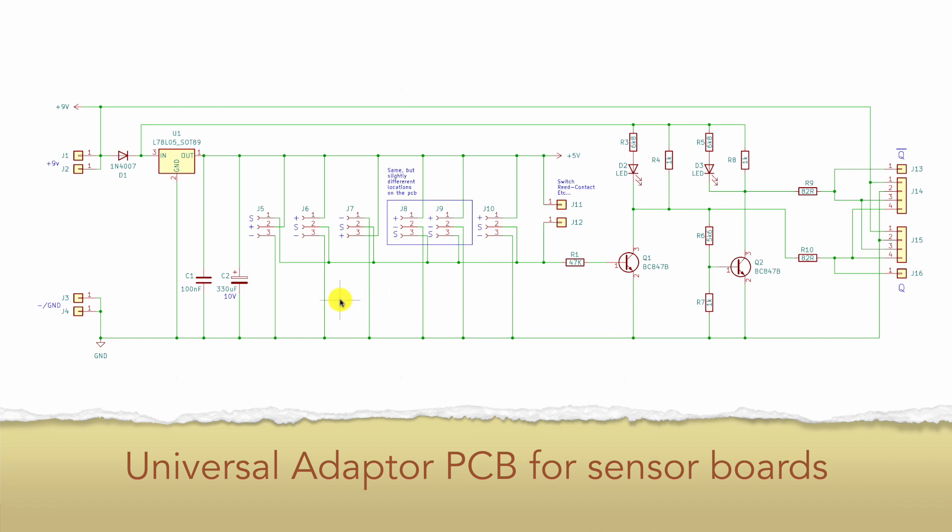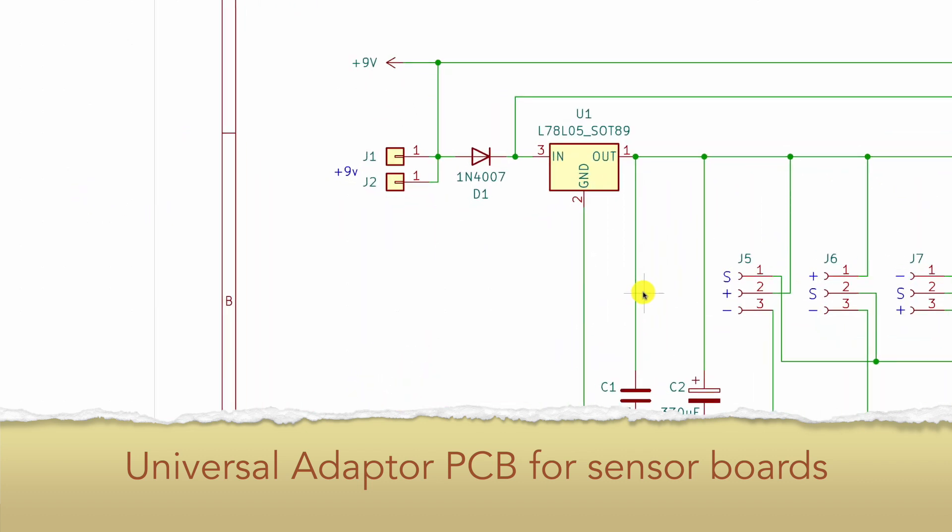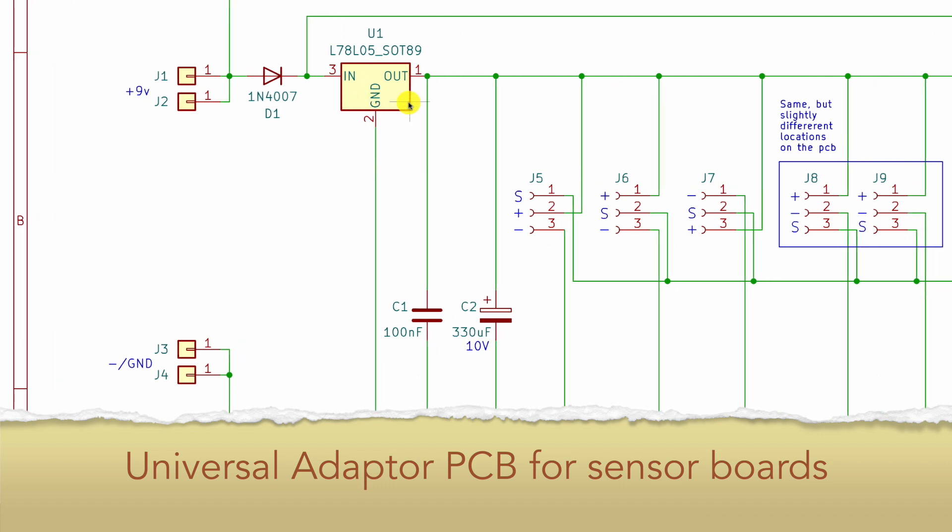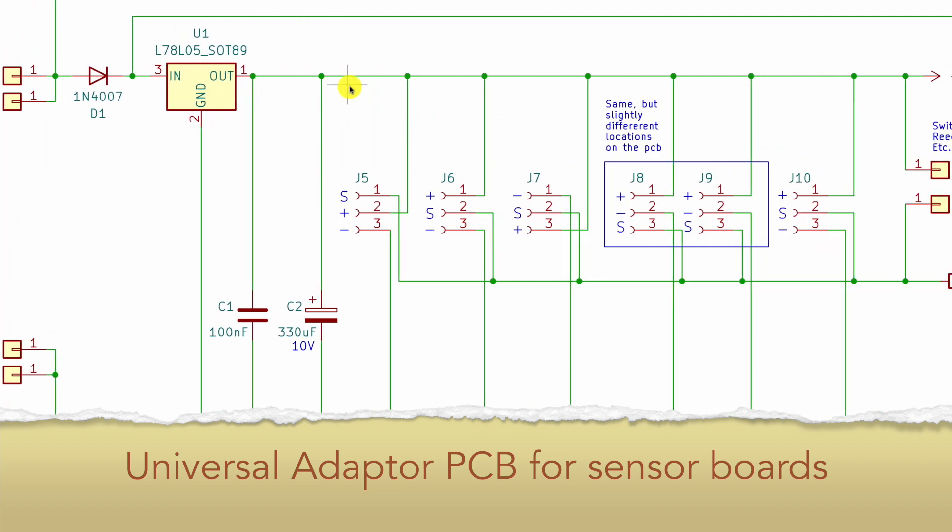All right, so here we have the schematic I came up with. It shows the universal adapter board with which I hope all the above requirements will be met to ensure optimum compatibility with the classic Fischertechnik electronic modules. The original electronic design of their output stage was taken as a starting point. That original design also adds the inverted signal with a second transistor. Here on the left is where the higher voltage 9 volts comes in. A simple short circuit protection is the diode I have included here. And I also use the well-known 5 volt voltage regulator, the 78L05, which turns it into 5 volts over here.